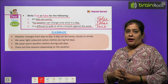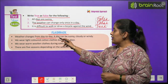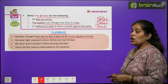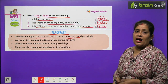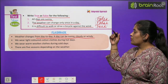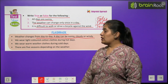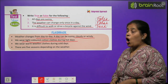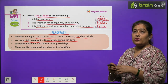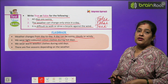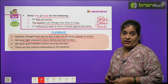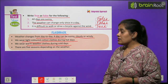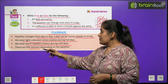Flashback: Weather changes from day to day — a day can be sunny, cloudy, or windy. Roz badalta hai — kabhi sunny, kabhi cloudy, ya phir kabhi windy hota hai. We wear light-colored cotton clothes during hot days. We wear warm woolen clothes during the cold days. There are five seasons depending on the weather.